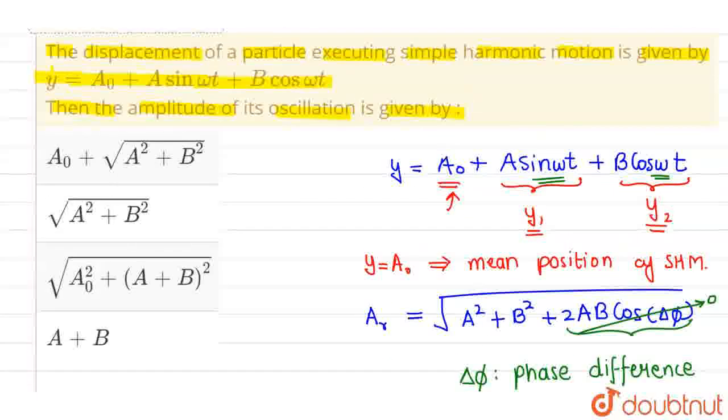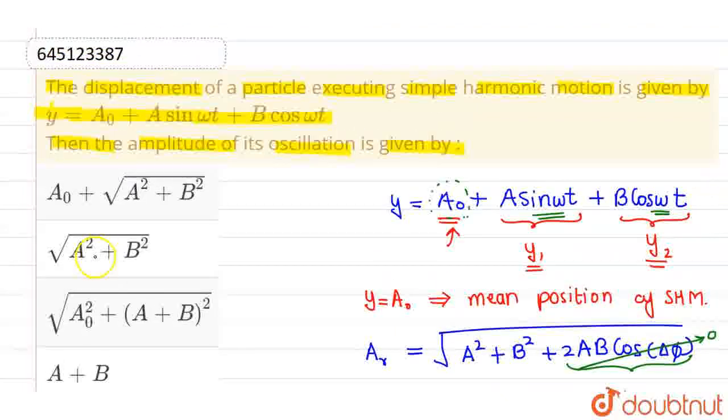This is our final answer. We do not have any concern with A0 because it is just changing the mean position. So the correct option is option 2 and rest all options are incorrect. I hope you understood. Thank you.